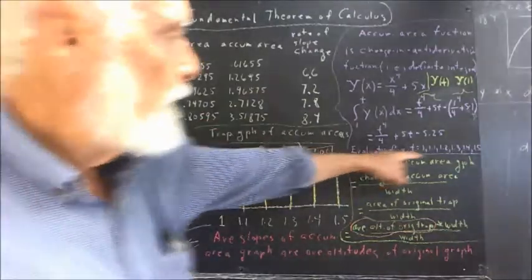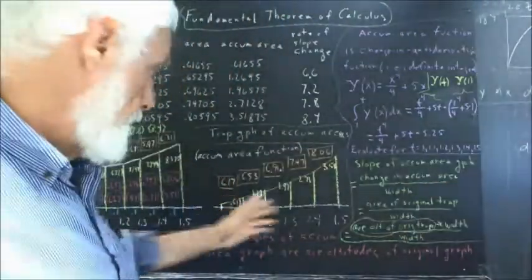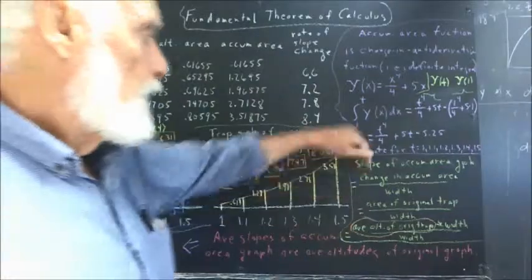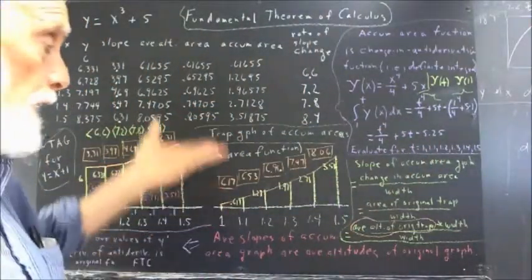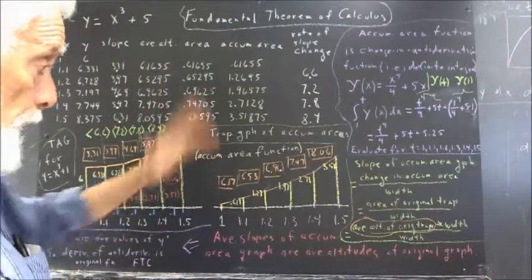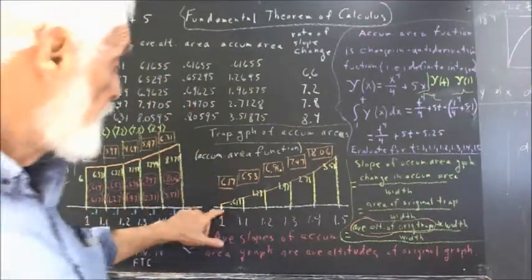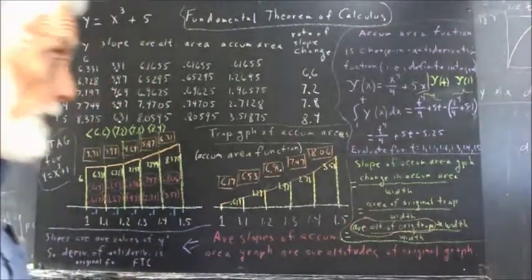So the slope of our accumulated area graph between any two points is the change in the accumulated area, obviously the rise, the change in the value measured in this direction which is the accumulated area, divided by the width of the trapezoid.